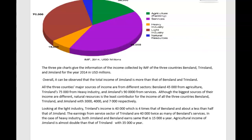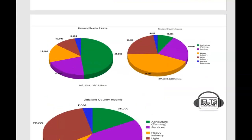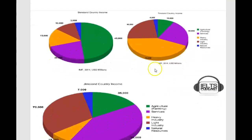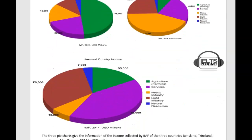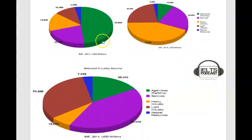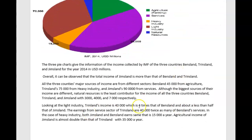Overall, it can be observed that the total income of Jim's land is more than that of Ben's land and Tim's land. You keep writing 'Trin's land' but that's wrong. That statement is accurate. I think you could have maybe added one more piece of information — you could have also said that in the three countries the distribution of income, or rather the industries that contributed to the income, varied considerably, because in each country it's different.